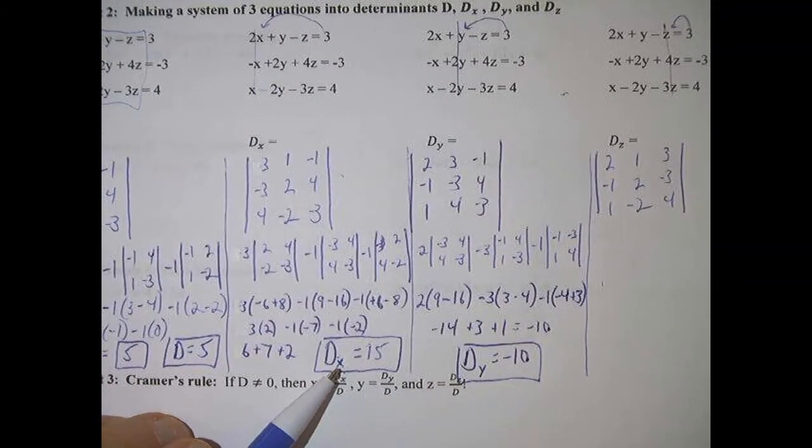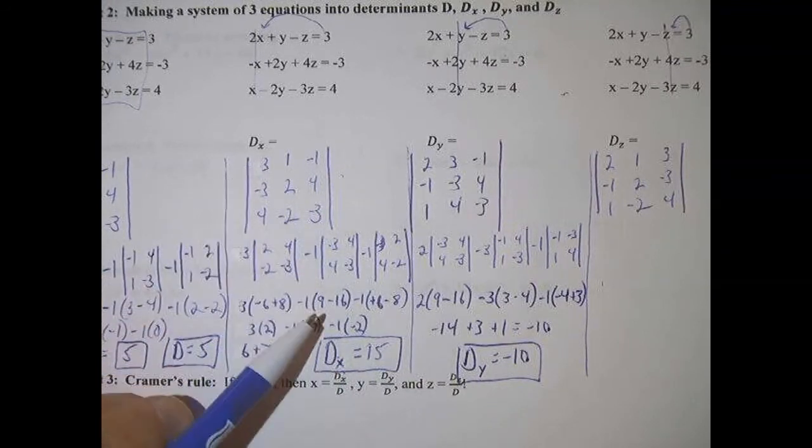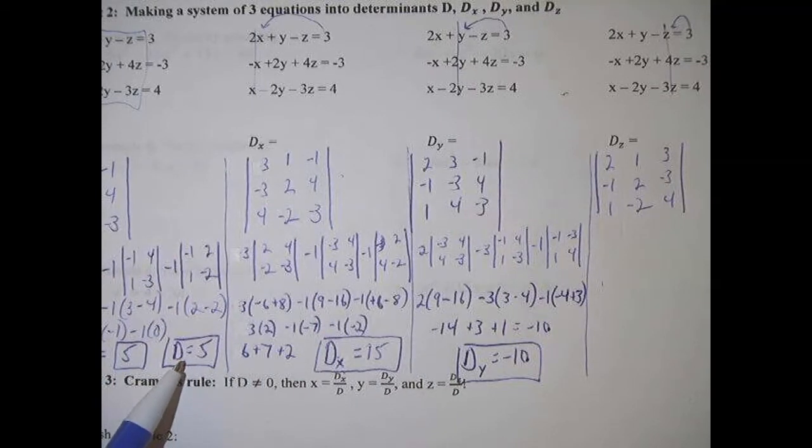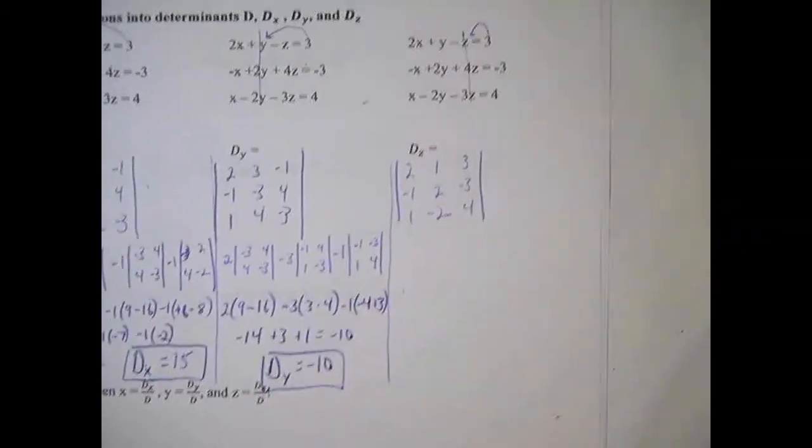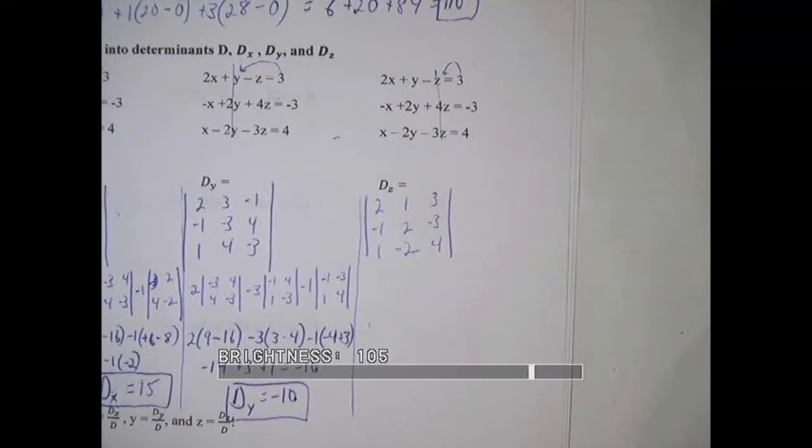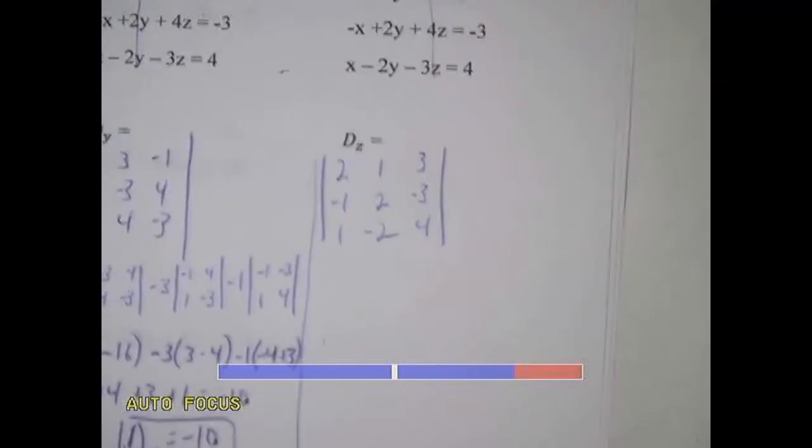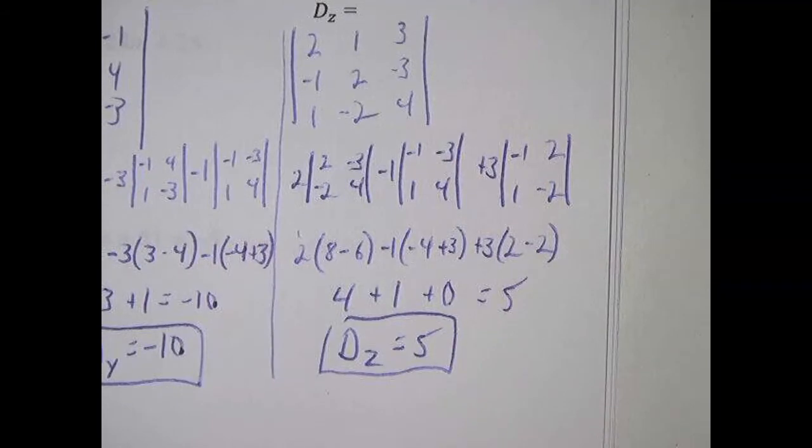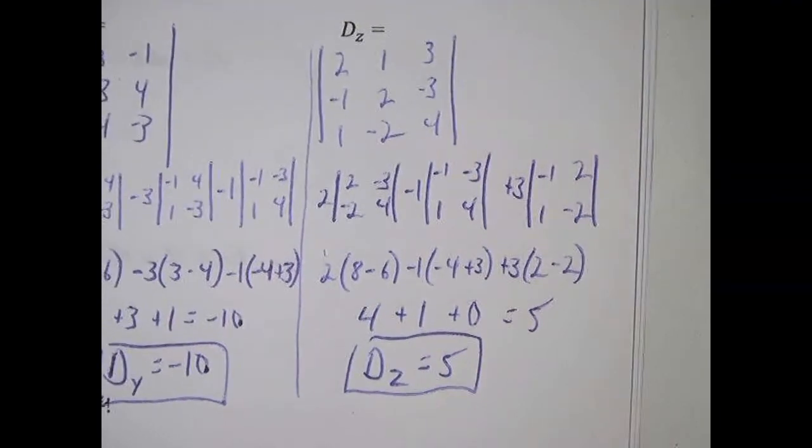All right let's try the next one. I'm going to again pause it and let you guys try Dy. So Dy is negative 10. By the way I had accidentally called this Dy, this is Dx. So Dx so far is 15, Dy is negative 10, D is 5. We have one more and then we're ready to apply Cramer's rule.